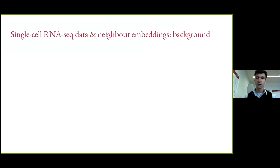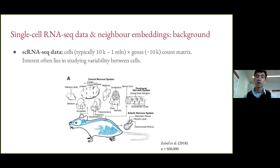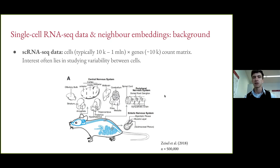There's some background I want to cover quickly to make sure we're all on the same page. Single-cell RNA-seq data, single-cell transcriptomic data, is data that comes when people are profiling gene expression over a large number of cells simultaneously. The interest typically lies in studying variability between cells — different cells do different things, express different genes, and we want to understand this variability by looking at their gene expression.